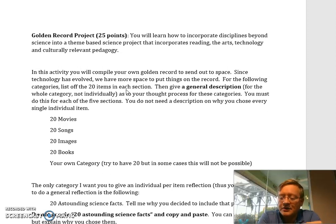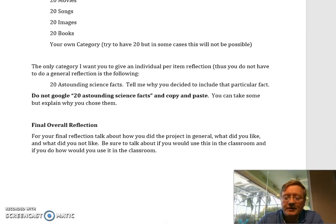And then I want you to create your own category. With this reflection, again, it's the overall for all 20 items. What would you put into it? And try to have 20. In some cases you may not, but what would be the 20 items that you would put into it? Why did you choose that category? What was your train of thought for this?